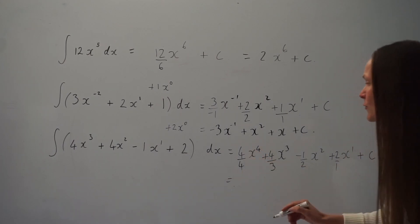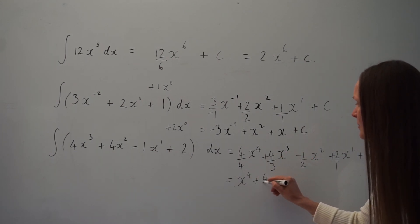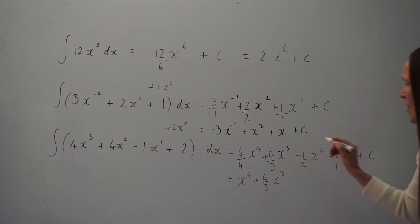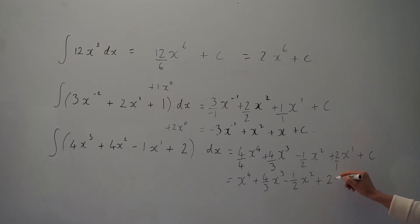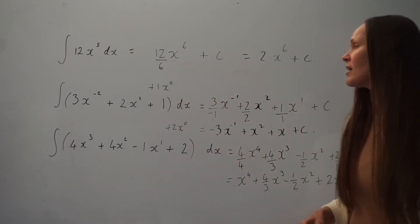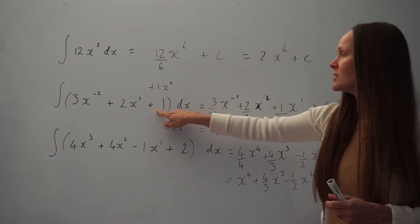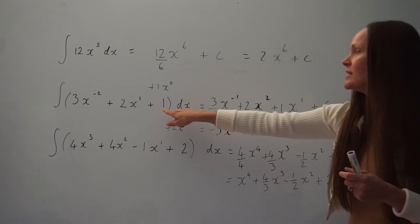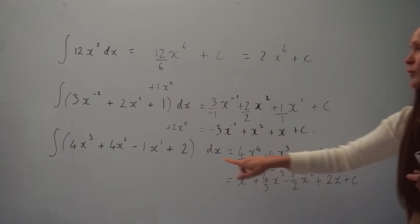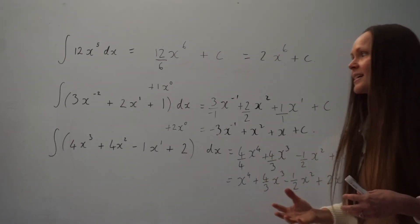Simplifying: 4 divided by 4 is 1, giving x to the power of 4; 4 thirds x cubed can't be simplified further; then negative one half x squared; and 2 divided by 1 is 2, giving 2x plus c. Once you've done a few of these you might find writing out x to the power of 0 tedious. The quick shortcut is: when integrating a constant, just stick an x next to it. So integrating 1 gives 1x, integrating 2 gives 2x, integrating negative 5 gives negative 5x.